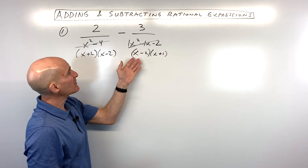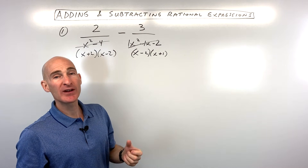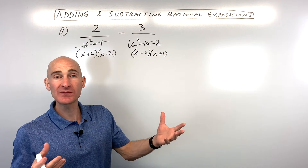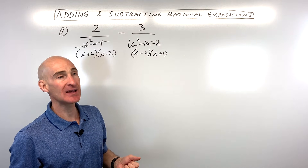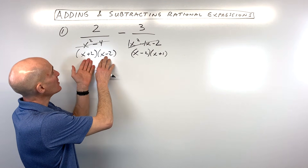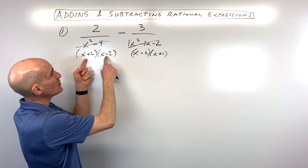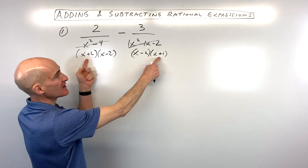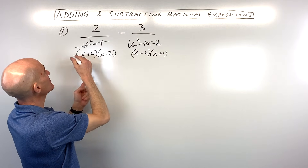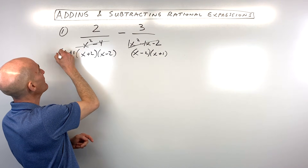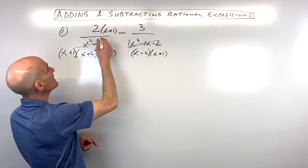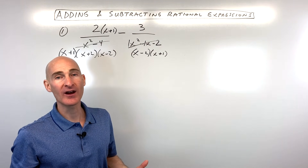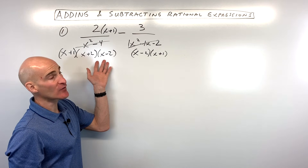Now the next thing you want to do is get a common denominator. What I oftentimes do is look at what's missing — what do I need so that they have the same denominator? I notice I've got x plus 2 and x minus 2, but I don't have an x plus 1 like this denominator has. So I'm going to multiply the numerator and denominator by what's missing, because anything divided by itself is like 1, so it doesn't change the value of the fraction.